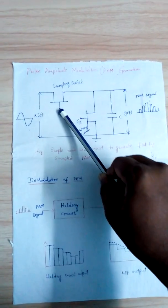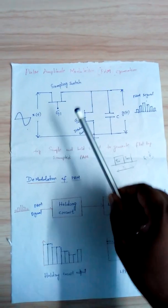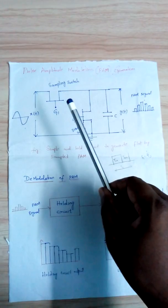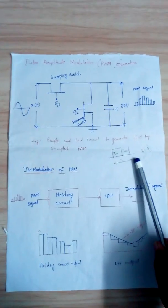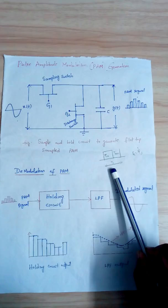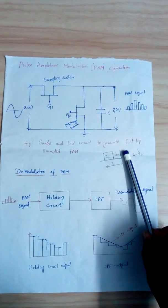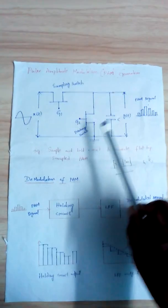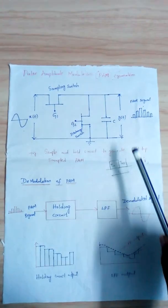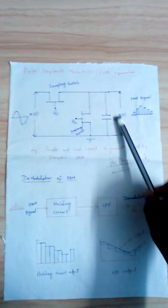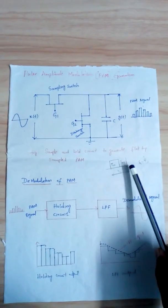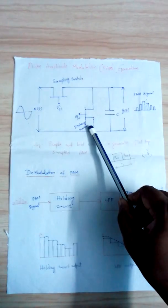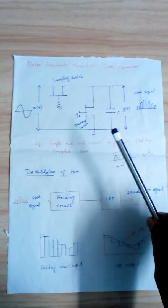The sampling switch samples the input signal X(t) and generates a time period T_S, which contains both T_on and T_off intervals. During the on-time T_on, the capacitor charges and holds the instantaneous value of the input signal. During the off-time T_off, the capacitor discharges through the discharge switch.